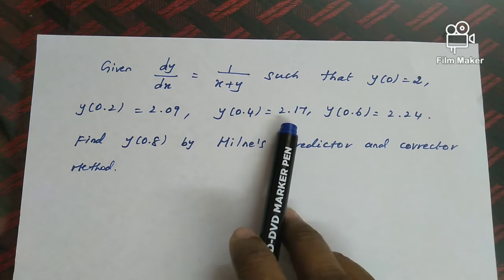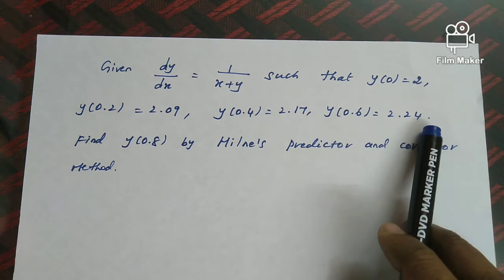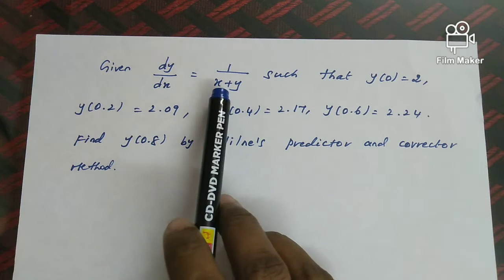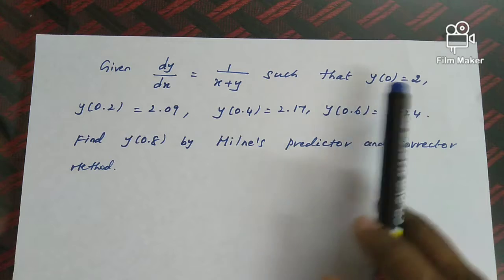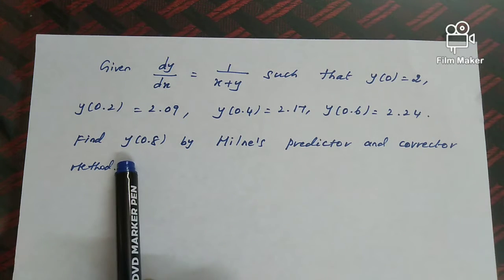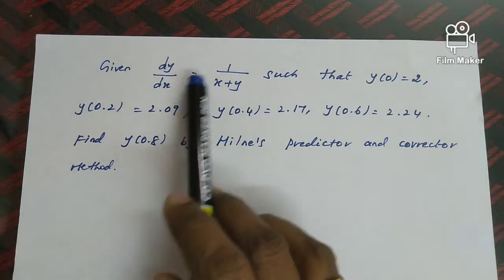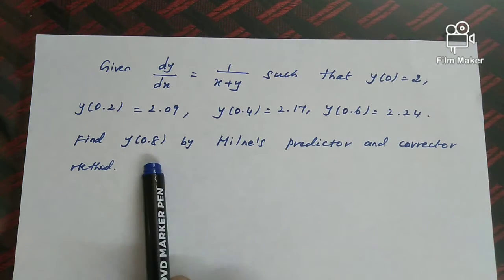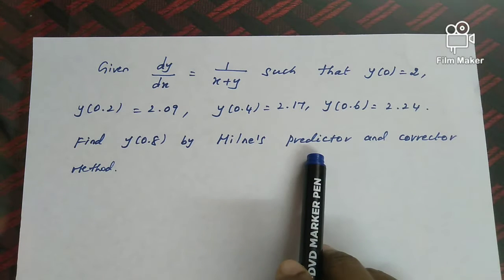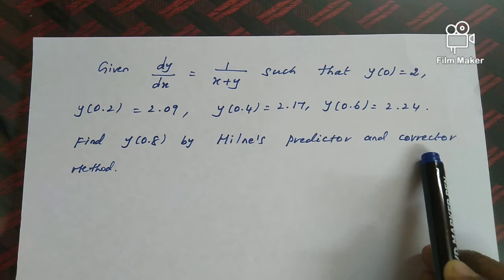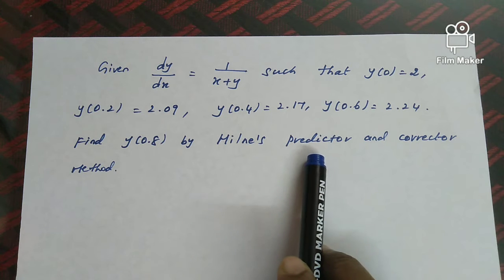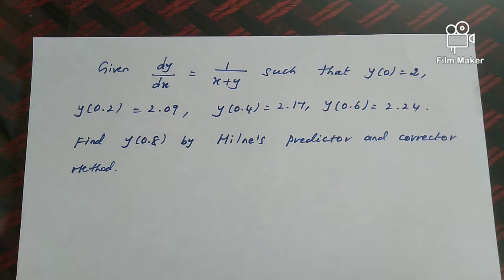Continuing the problem data: y(0.4) = 2.17, y(0.6) = 2.24. Find y(0.8) by Milne's predictor-corrector method. The differential equation is given along with y(0), y(0.2), y(0.4), and y(0.6). We are going to first predict the value and then get the corrected value — this is called the predictor and corrector method.